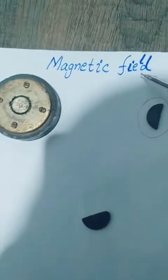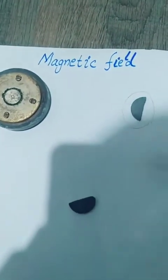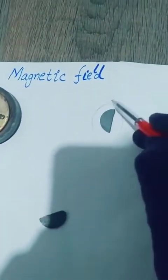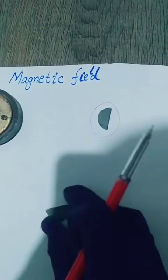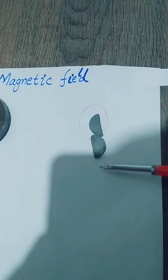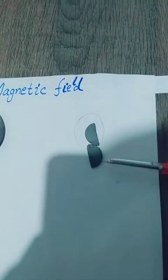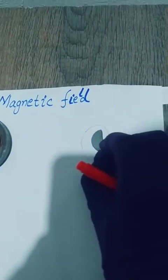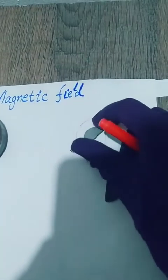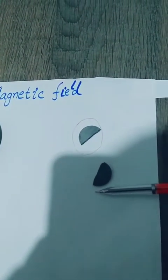To understand the concept of magnetic field, we have to take three magnets. This magnet can draw a circle, which means that this magnet has a specific position. If we take this magnet close to another magnet, they will attract each other. We will note the point at which attraction is happening.